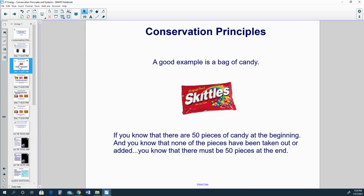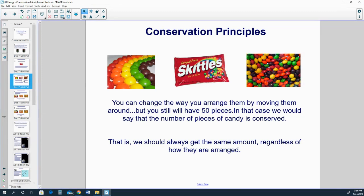As an example, let's take a look at a bag of candy. If you know that there are 50 pieces of candy at the beginning and you know that none of the pieces have been taken out or added, you know that there must be 50 pieces at the end. You can change the way you arrange them by moving them around, but you still will have 50 pieces. In that case we would say that the number of pieces of candy is conserved. That is, we should always get the same amount regardless of how they are arranged.